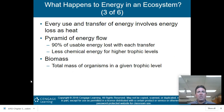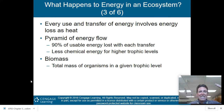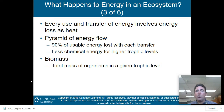Every use and transfer of energy involves energy loss as heat. The pyramid of energy flow shows that 90% of usable energy is lost with each transfer. Less chemical energy is available the higher you go in the trophic level.